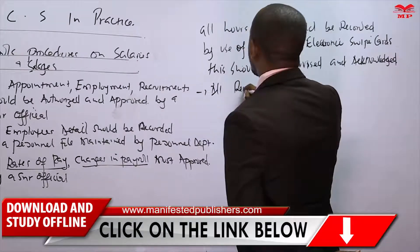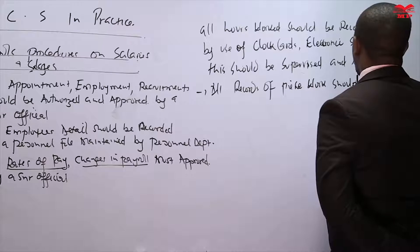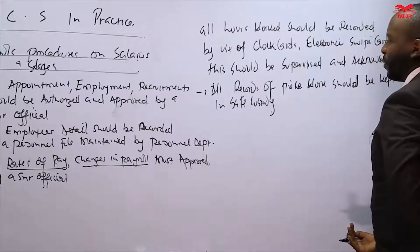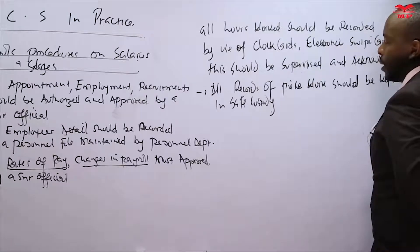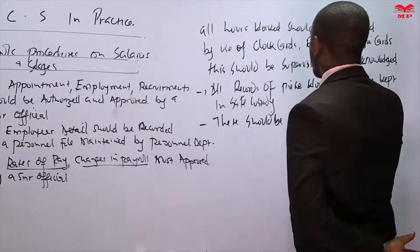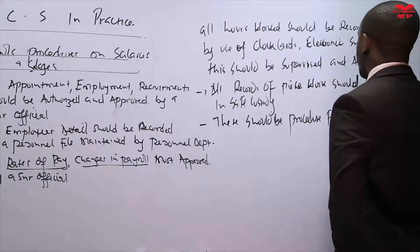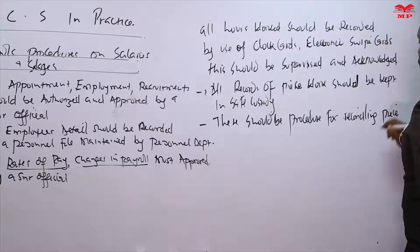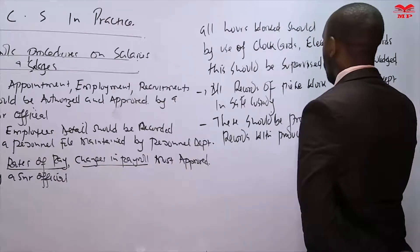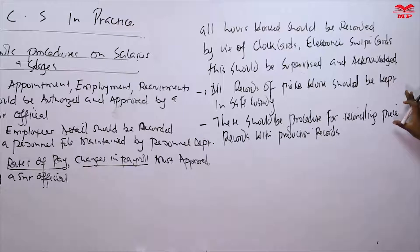For piece rate workers, all records of piece work should be kept in safe custody. We do not want anyone to have access to those records and inflate them. There should also be a procedure for reconciling piece records with production records to ensure consistency.